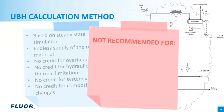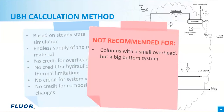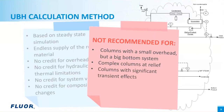The unbalanced heat method is usually used for grassroots projects. However, it is not recommended for columns with a low overhead-to-bottom flow ratio — meaning a small overhead and large bottom system, such as a stripper or stabilizer. It is not recommended for complex column systems, for example reactive distillation columns or columns with relief near critical regions. It is also not recommended for columns with significant compositional changes and transitional changes during relief. The vapor blowthrough case cannot be handled by the unbalanced heat method either.